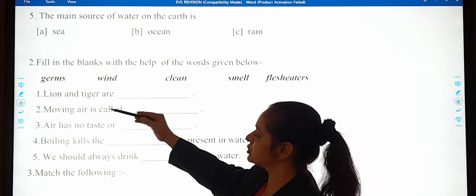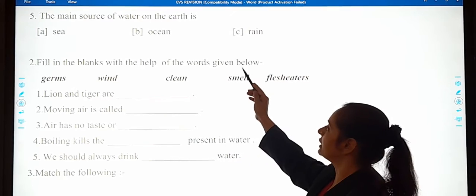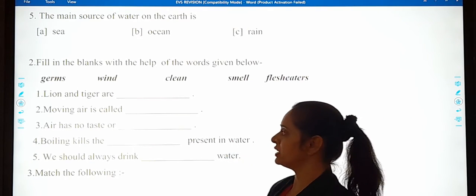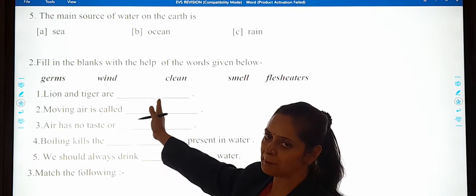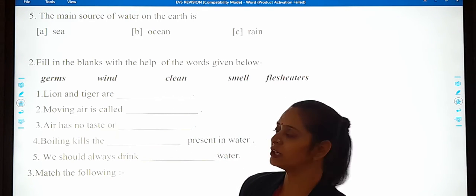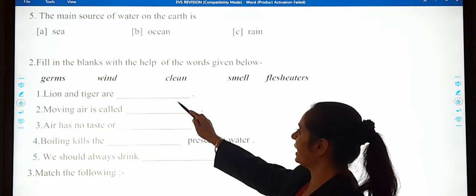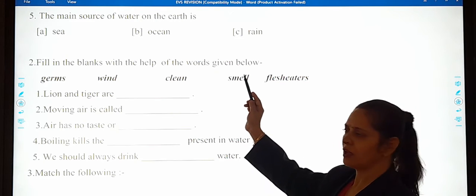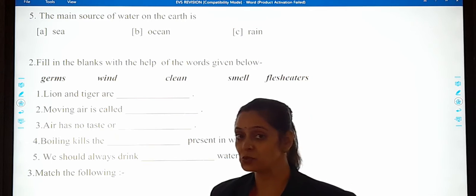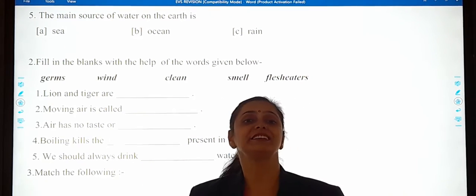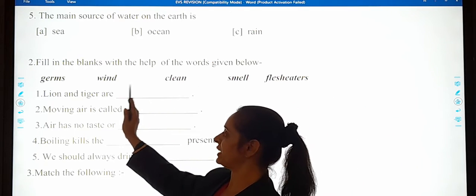And the next question is, fill in the blanks with the help of the words given below. Students, with the help of help box, you have to fill in the blanks. Let me do one for you. Lion and tiger are dash. They are smell or clean or flesh eaters. You have already done. So lion and tiger are flesh eaters.